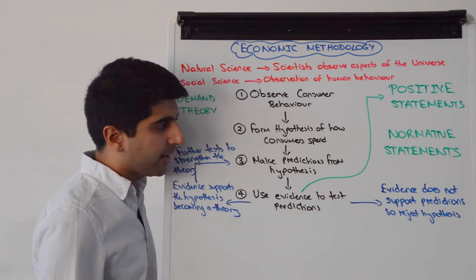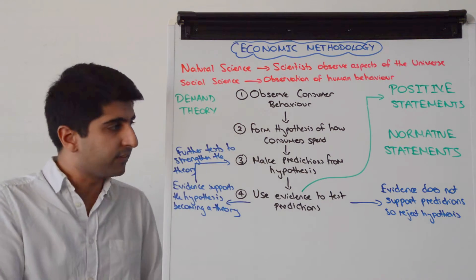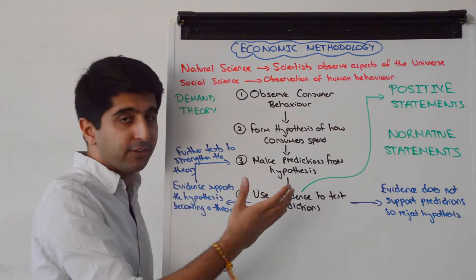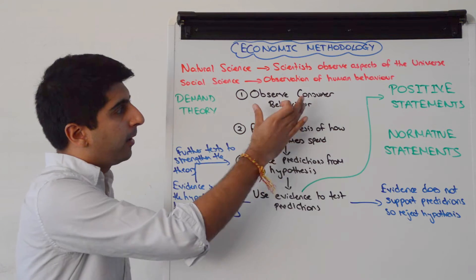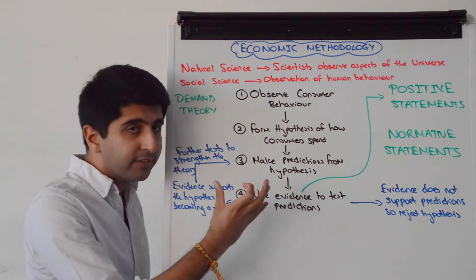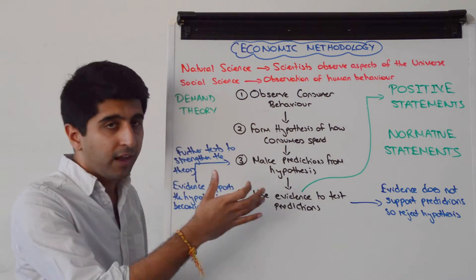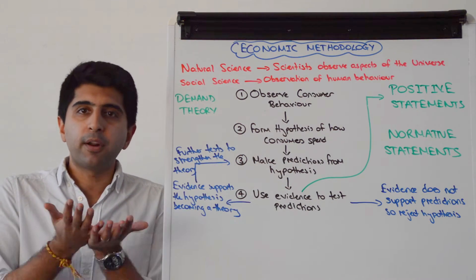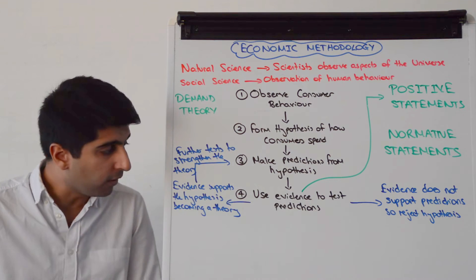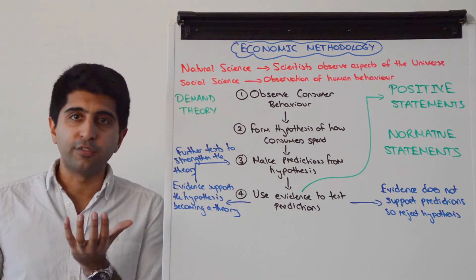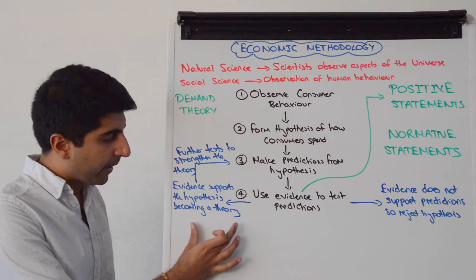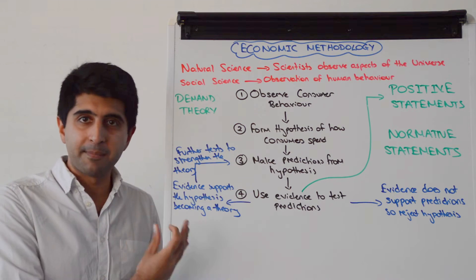If the evidence doesn't back up the predictions — if the evidence goes against the predictions — the hypothesis is rejected and economists go back to square one, starting again by observing different consumer patterns and different kinds of consumer behaviors. However, if the evidence collected backs up the predictions, i.e. it supports the idea that when prices rise consumers spend less whereas when prices fall consumers spend more, then we have the basis of a theory. Our hypothesis becomes a theory, and that becomes the law of demand.